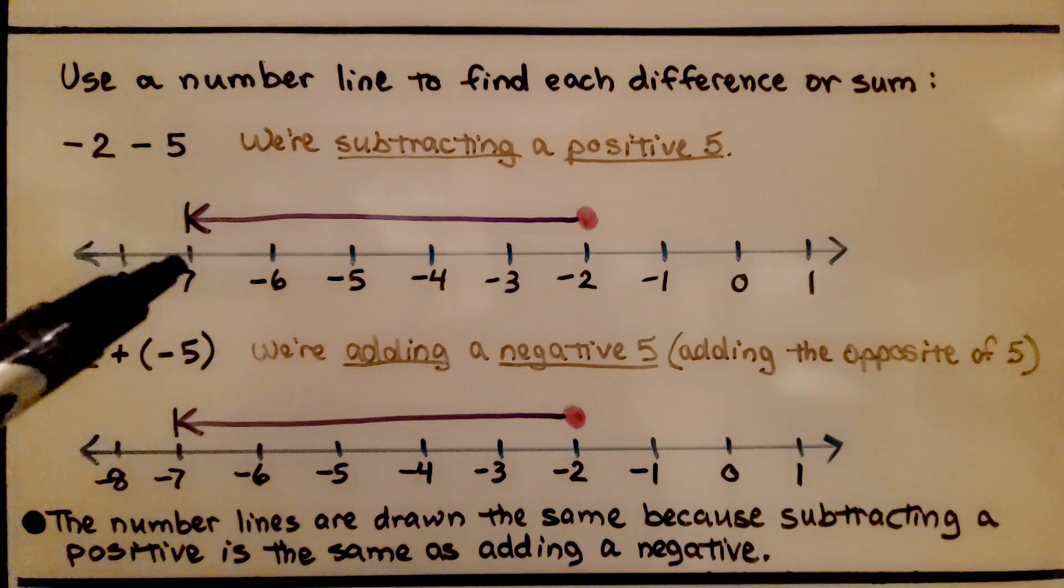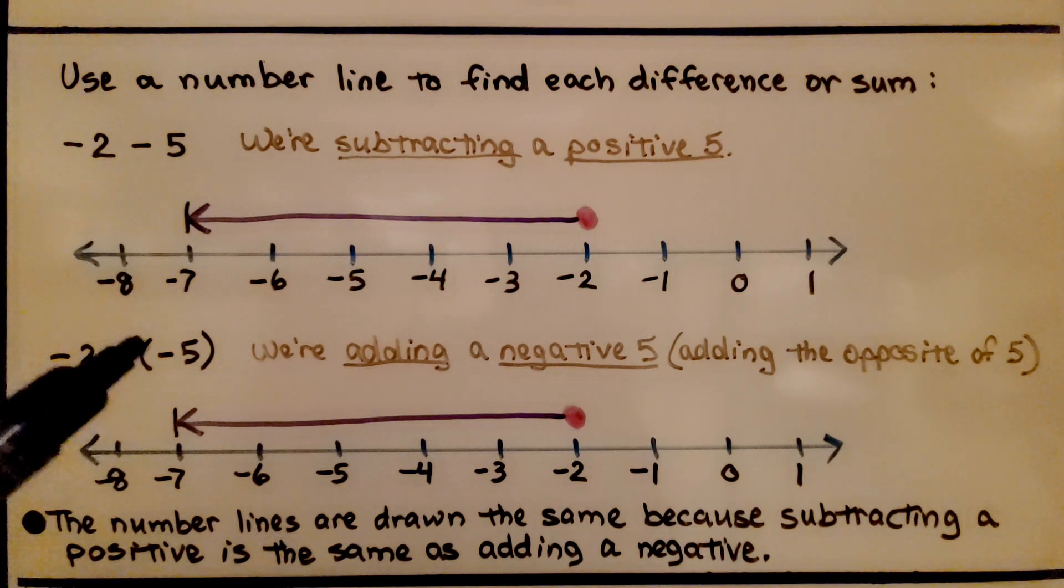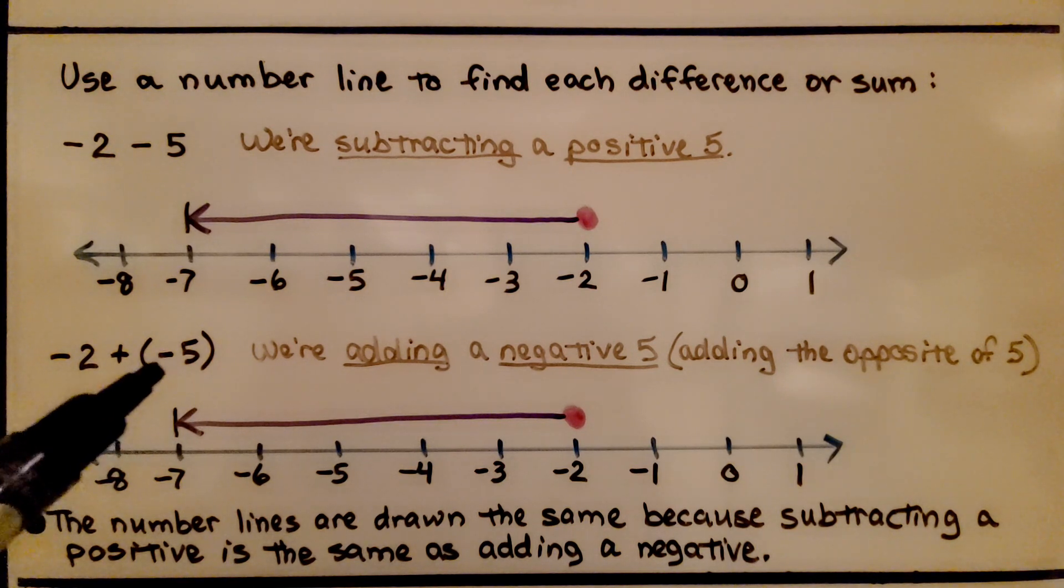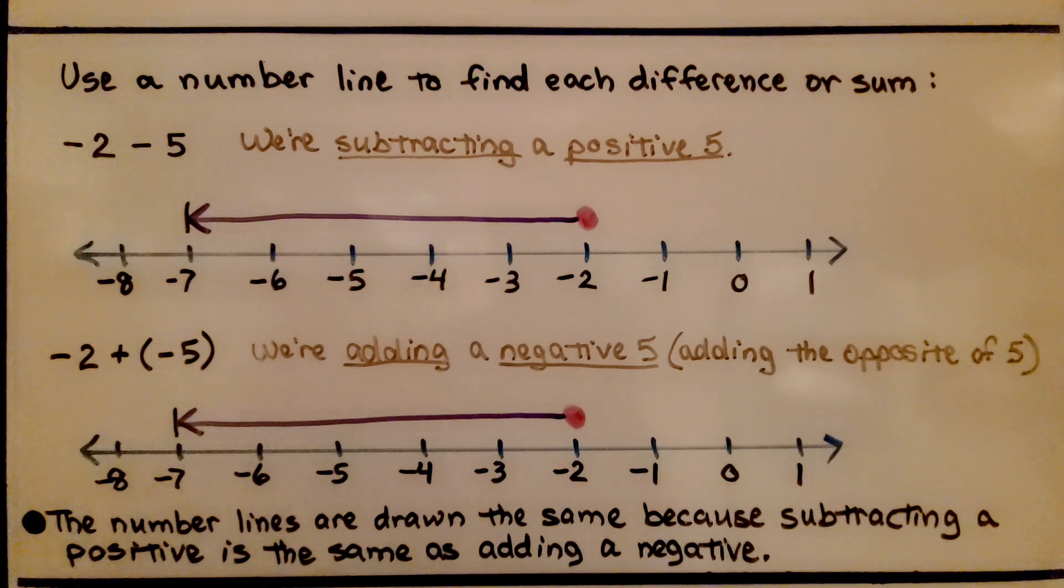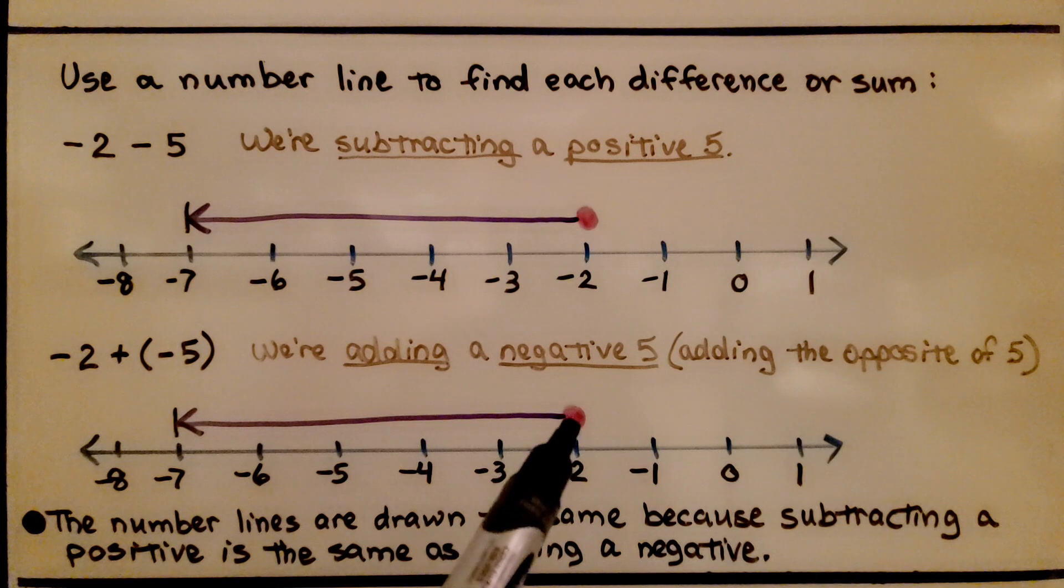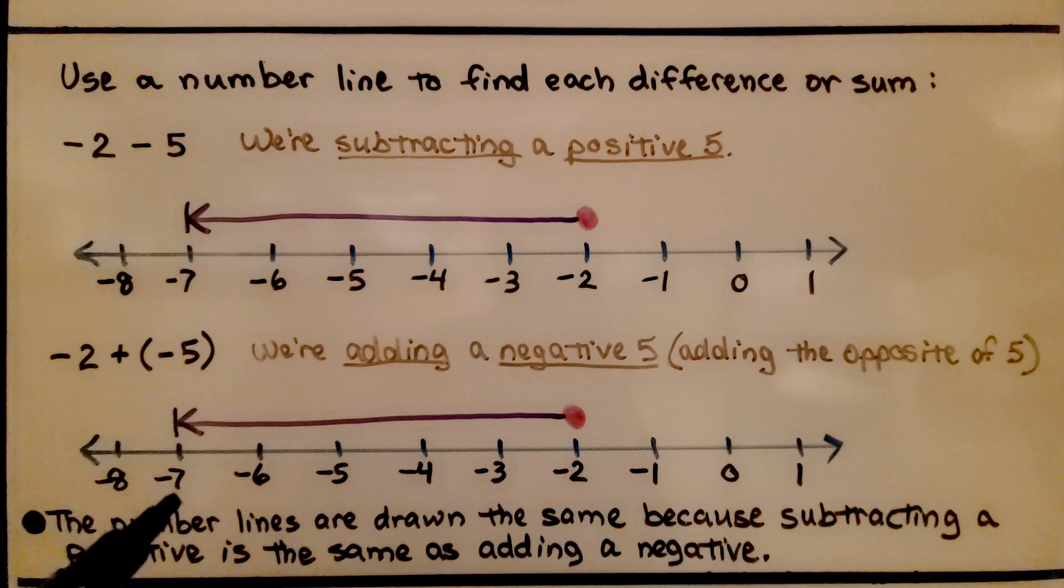We know negative 2 minus 5 is negative 7. Here we need to add negative 2 plus a negative 5. We're adding the opposite of positive 5. We start with our point at negative 2 and we add a negative, so we move into the negatives, 5 units. We're at negative 7. The number lines are drawn the same because subtracting a positive is the same as adding a negative.